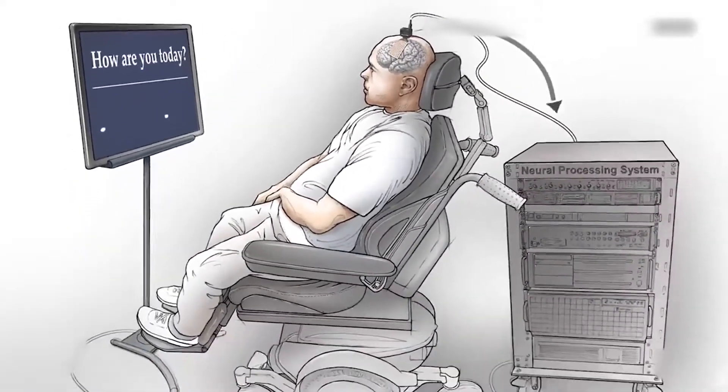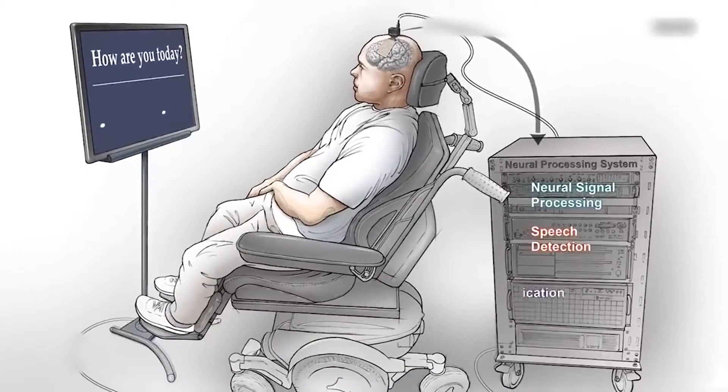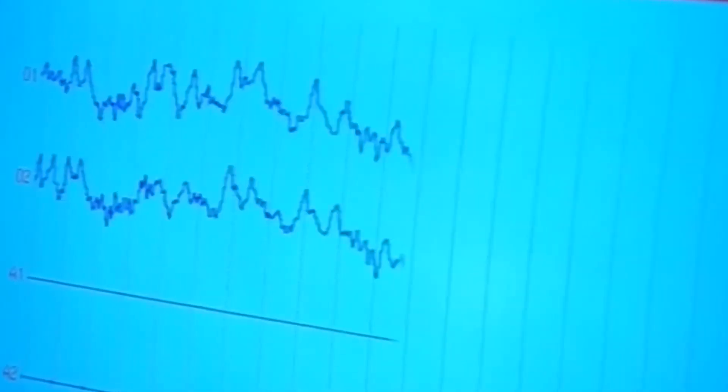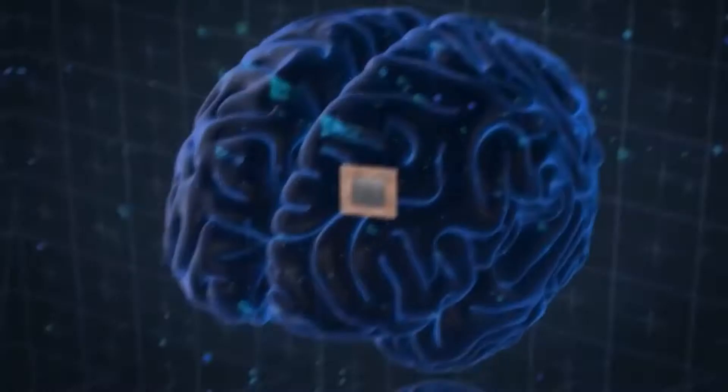For instance, a paralyzed person with a Neuralink chip implanted in their brain could control a mouse and keyboard without moving their limbs. Information could also be transmitted the other way and allow the person's brain to simulate sensation.